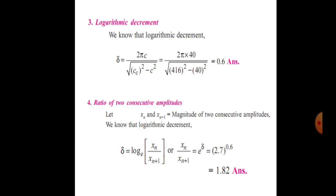Now the third one — the logarithmic decrement. This is calculated by: δ = 2πc / √(cc² − c²) = 2π × 40 / √(416² − 40²), and we get the answer 0.6. The logarithmic decrement has no units. The ratio of two consecutive amplitudes: xn/xn+1 = e^δ = 1.82. This is the answer.